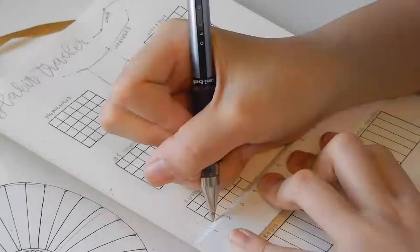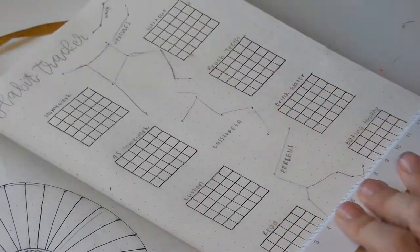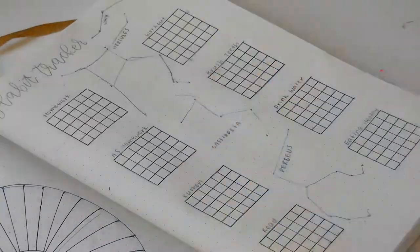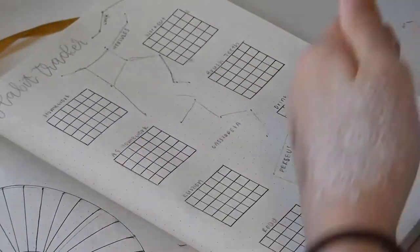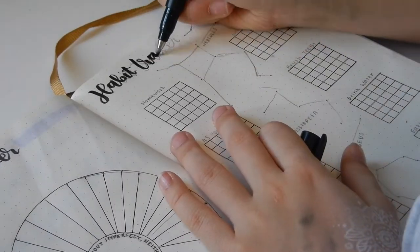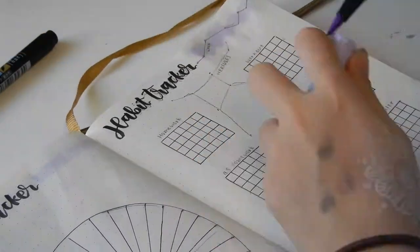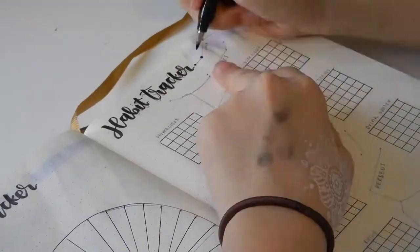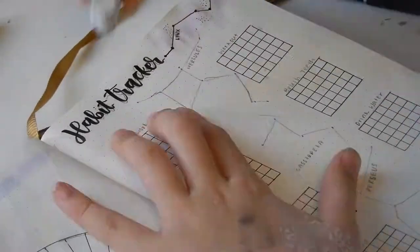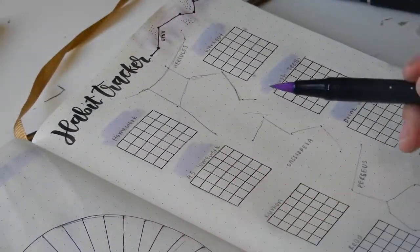In the middle, I have more constellations, which are Hercules, Cassiopeia, and Perseus. Here I am using my Tombow Fudenosuke brush pen and just adding in habit tracker. I also drew another constellation at the top, and I think it is the Lynx.